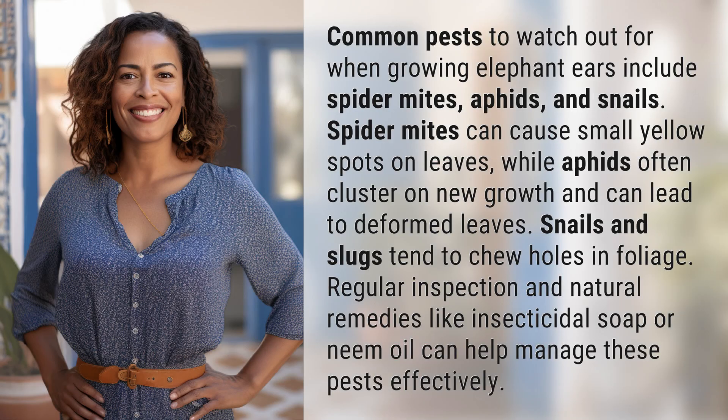Common pests to watch out for when growing elephant ears include spider mites, aphids, and snails. Spider mites can cause small yellow spots on leaves, while aphids often cluster on new growth and can lead to deformed leaves. Snails and slugs tend to chew holes in foliage. Regular inspection and natural remedies like insecticidal soap or neem oil can help manage these pests effectively.